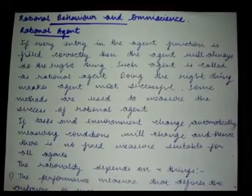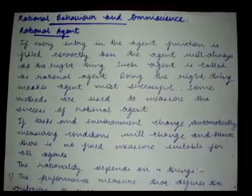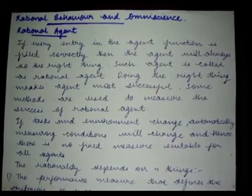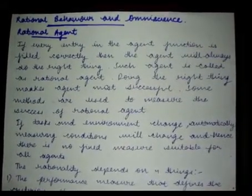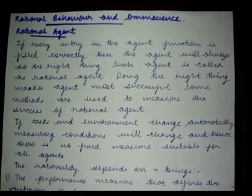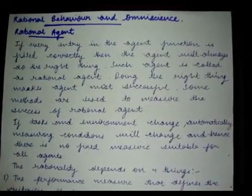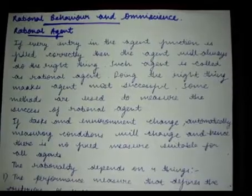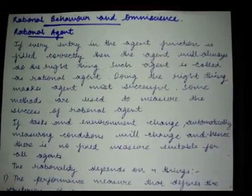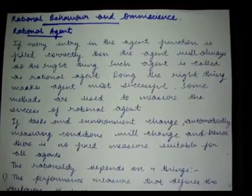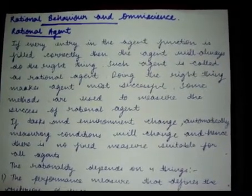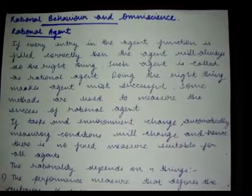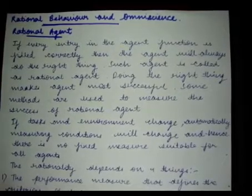Doing the right thing makes the agent more successful. Some methods used to measure the success of a rational agent exist in the prologue and other agent programs. While directly making decisions, we can measure the accuracy of those decisions. The agent will be sure of its accuracy — for example, after taking a turn to the right, it might say this is a 90% accurate decision, whereas taking the left side is a more accident-prone area. When an agent is working in the environment, it generates a sequence of actions according to the percept sequence it receives.